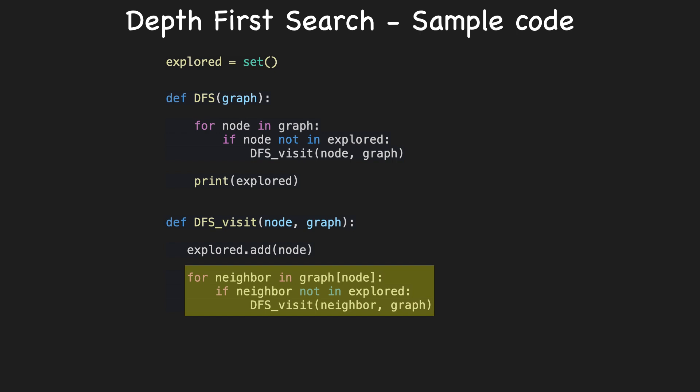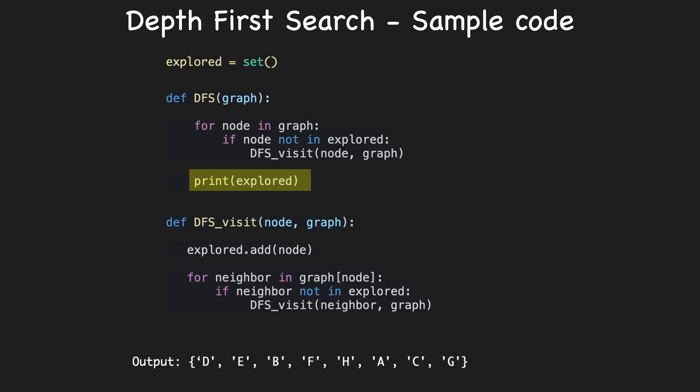Finally, we print the explored set and the output contains all the nodes that we have explored in the graph. I have included a GitHub link to this code in the description. Please do try it out to solidify your understanding further.